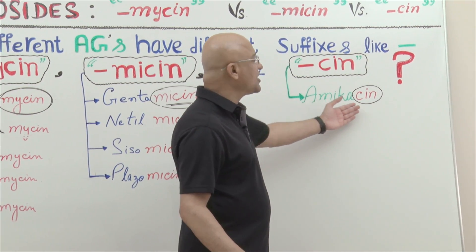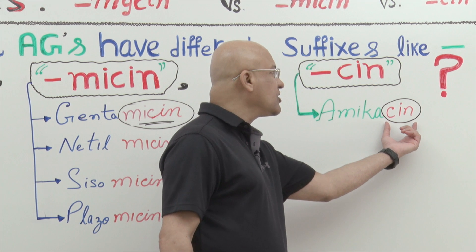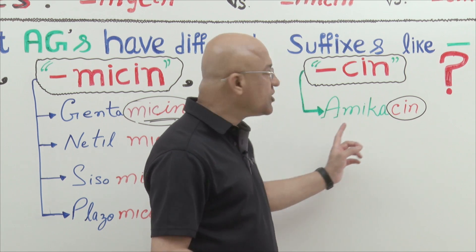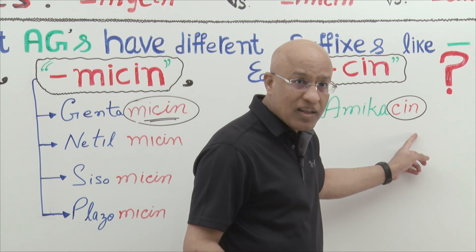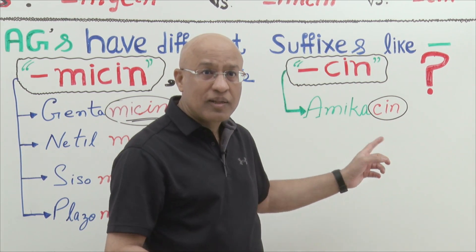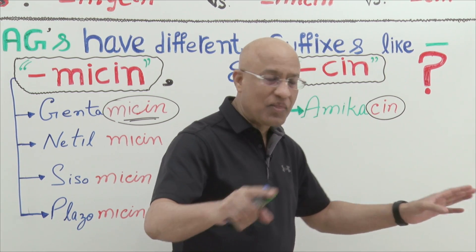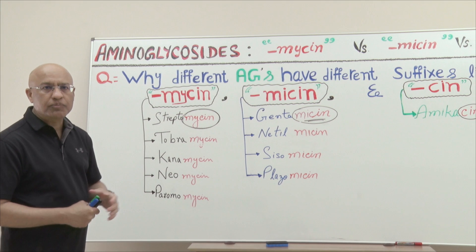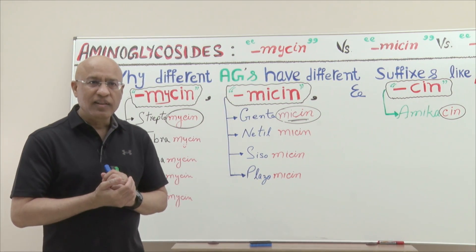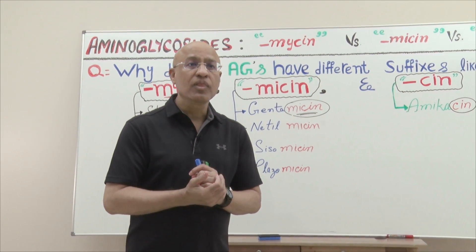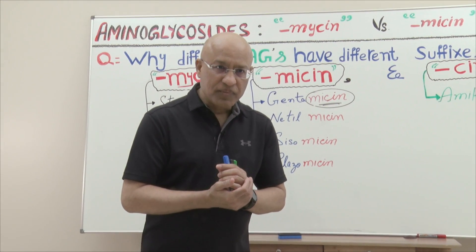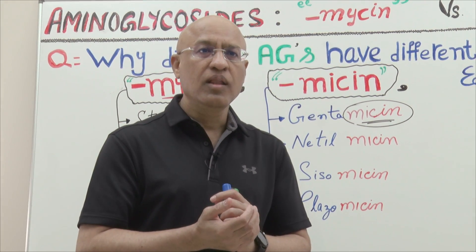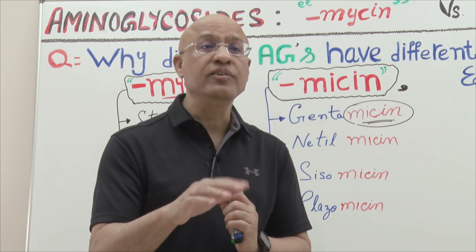And then there is this lonely aminoglycoside — amikacin — which has the smallest and most unique suffix. It is not 'amikamycin' and not 'amikamicin'; it is just amikacin. The real secret behind all these different suffixes lies in the origin of these molecules — the actual source of these aminoglycosides.